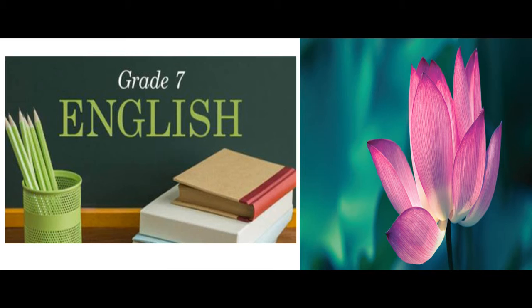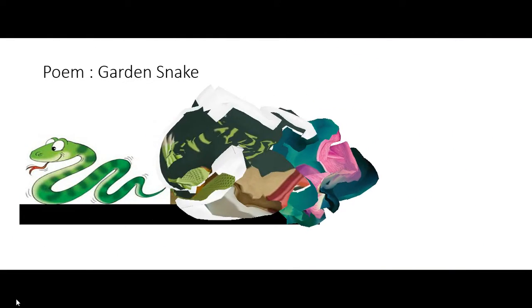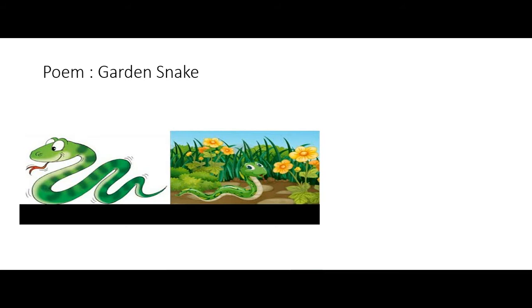Hello and welcome back to this session, children. In this session we will discuss the poem 'Garden Snake' from your Honeycomb textbook. We might have seen a lot of snakes and heard that they are very dangerous. If a snake comes in front of us, we may get scared and run helter-skelter. But in this poem, the poet signifies that the snake is not harmful at all. As a young child, he encountered such a situation where his mother informed him that certain kinds of snakes are not at all dangerous.